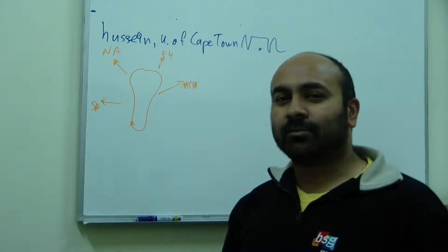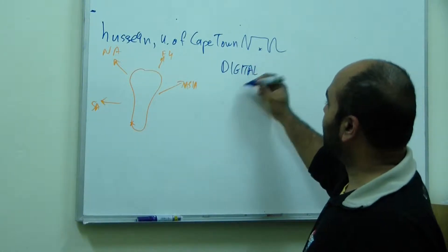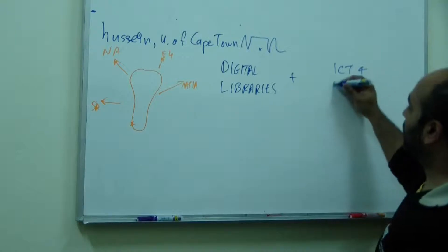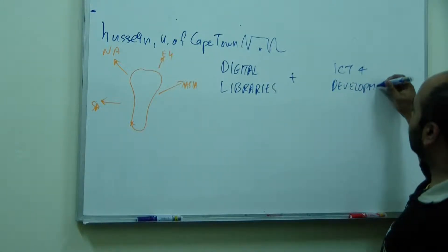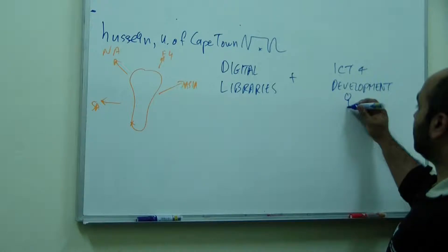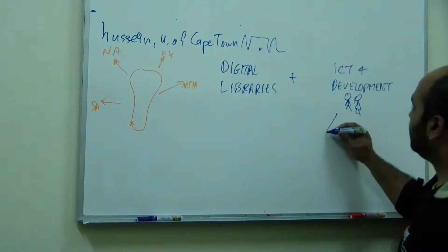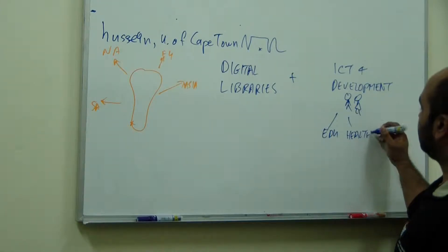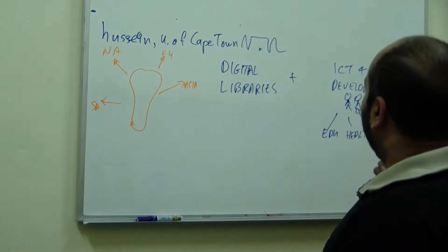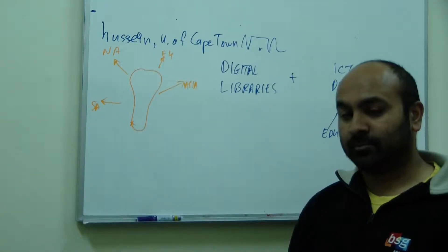At the University of Cape Town, I do research in a couple of different areas. The first is an area called Digital Libraries, which you might have heard of. The second is something called ICT for Development. When I say development, I don't mean software development — I'm talking about human development. We're talking about those things that people value: education, health, jobs, poverty, dignity, etc. ICT for Development is something we teach at postgraduate level.